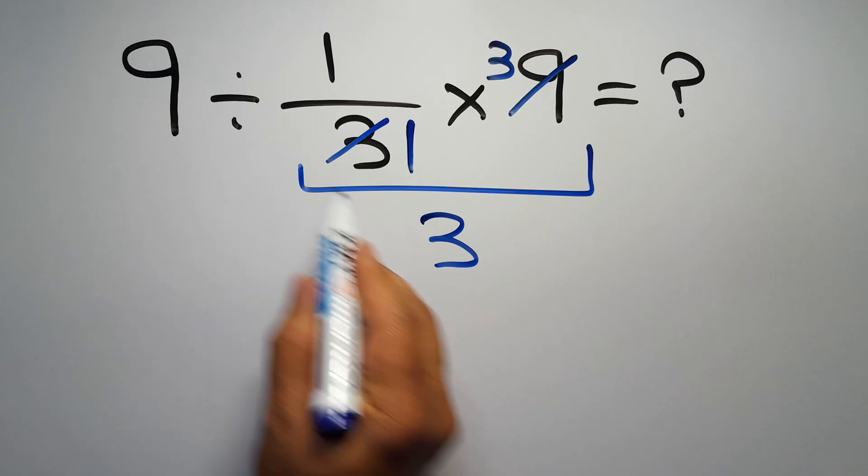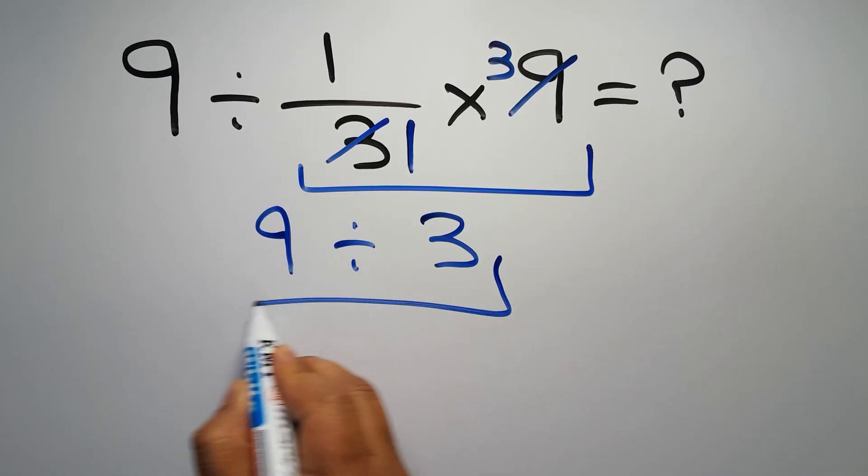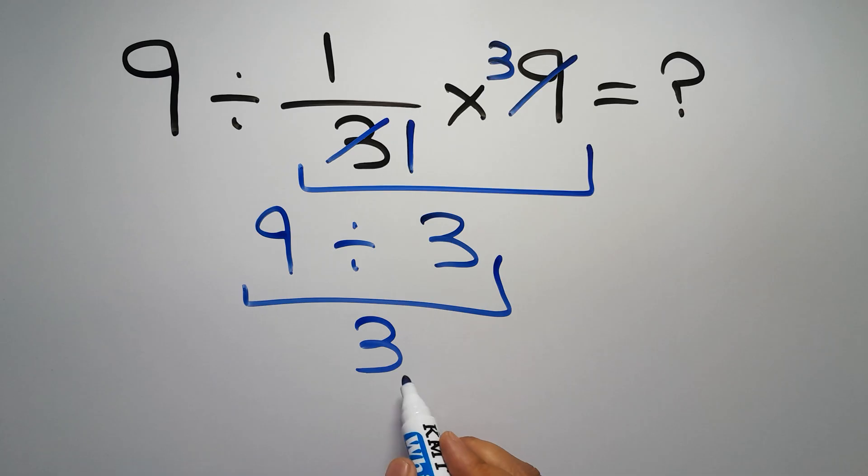And 9 divided by 3 equals 3. But this answer is not correct.